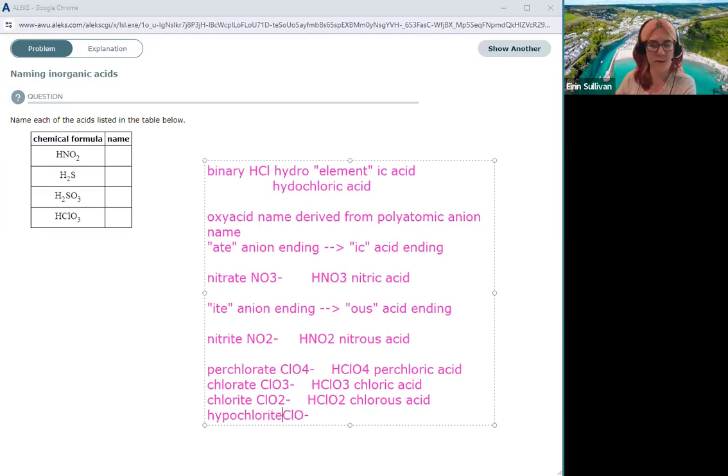All right, so stick an H plus on it, it's HClO. That would be hypochlorous acid. So we still keep the same prefixes, hypochlorous as the acid.